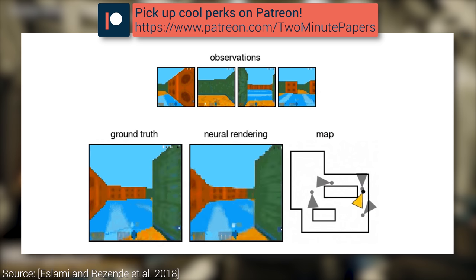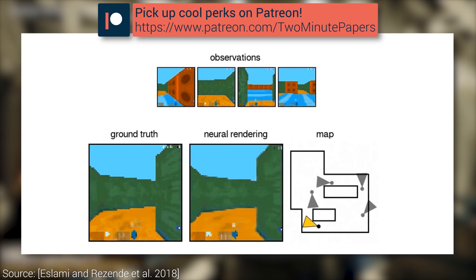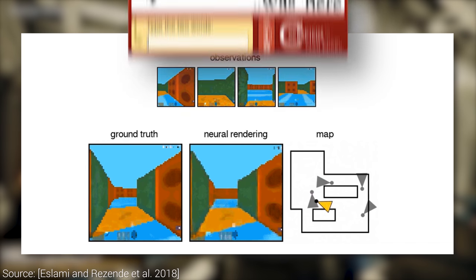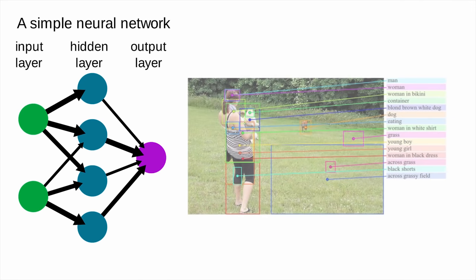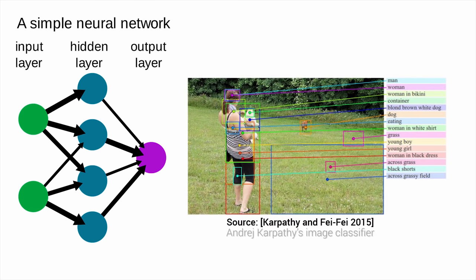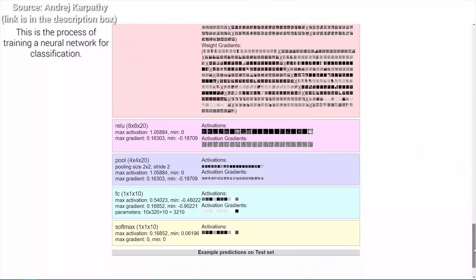This means that by changing the weights of the neural network, we can reprogram it to perform something completely different, for instance, solve a captcha for us. This work reveals a new kind of vulnerability by performing this kind of reprogramming of neural networks in an adversarial manner, forcing them to perform tasks they were originally not intended to do — tasks chosen by the adversary.